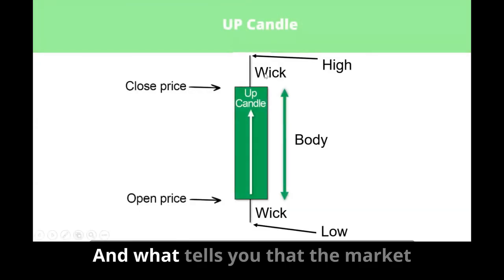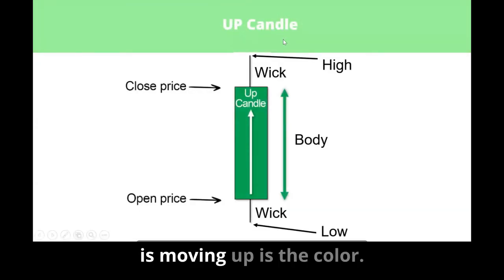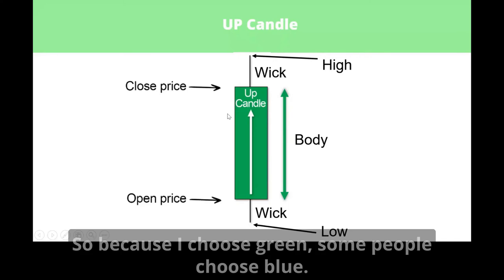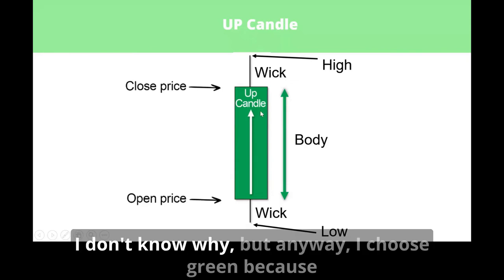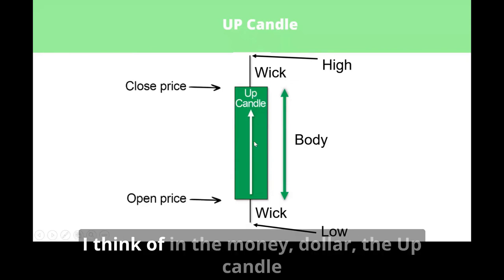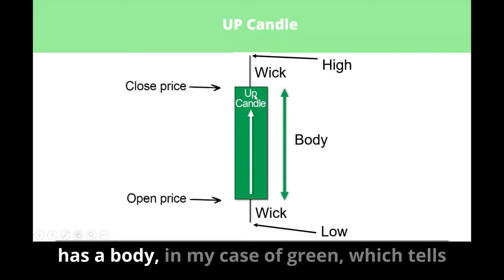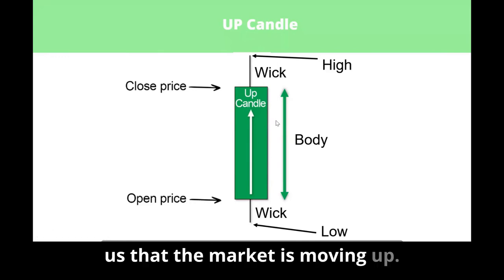What tells you that the market is moving up is the color. I choose green — some people choose blue, others white, others red — because I think of it as in the money, like a dollar. The up candle has a body of green, which tells us that the market is moving up.